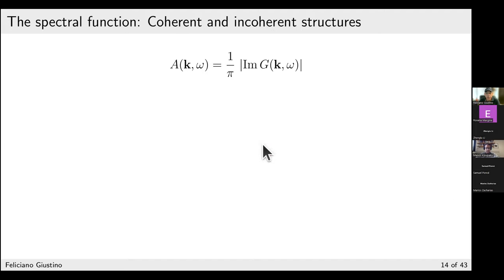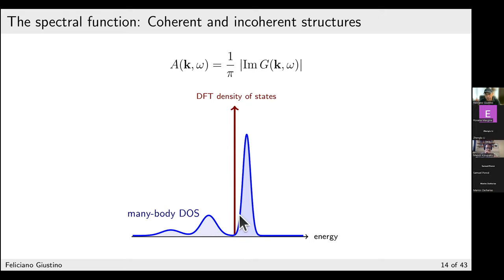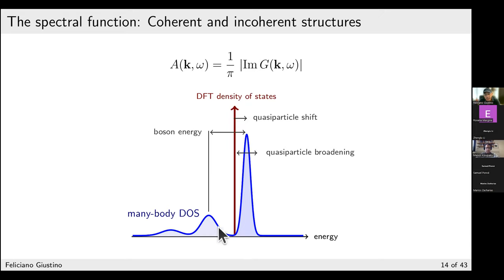In practice, starting from a single DFT eigenvalue, switching on many-body interactions (GW or electron-phonon) transforms the density of states: there is a quasiparticle energy shift (e.g., GW typically increases the band gap), a broadening of the peak corresponding to finite lifetime, and additional structure at other energies corresponding to shake-up excitations — when you remove an electron you disturb the system and disperse energy into other features. This latter contribution is called the incoherent satellite structure.